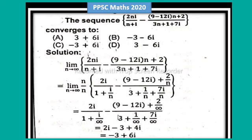so 9-12i divided by 3, so take a common 1 plus 1/infinity equal to 0, so 1 plus 1/infinity is also equal to 0, so take numerator 3, so 3 into 3i minus 4, 3 minus 4i,